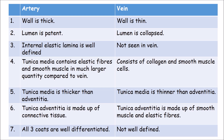The differences between artery and vein: In arteries the wall is thick; in veins the wall is thin. In arteries the lumen is patent; in veins the lumen is collapsed. In arteries the internal elastic lamina is well-defined; in veins it is not seen. In arteries the tunica media contains elastic fibres and smooth muscle in much larger quantities compared to veins, while in veins it consists of collagen and smooth muscle cells. In arteries the tunica media is thicker than the adventitia; in veins the tunica media is thinner than the adventitia. In arteries the tunica adventitia is made up of connective tissue; in veins it is made up of smooth muscle and elastic fibres.